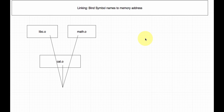Now let's cover dynamic linking. One thing I forgot to mention about static linking is that it creates a symbol table — a table that lists all the functions and values to be resolved across the .o files. If they can't be resolved, it's a compilation error; if they can be resolved, the executable compiles just fine.